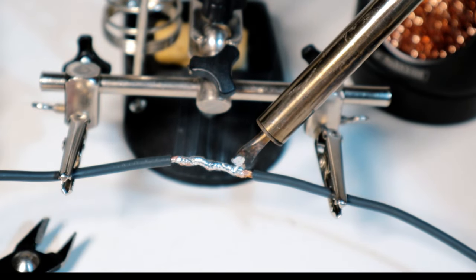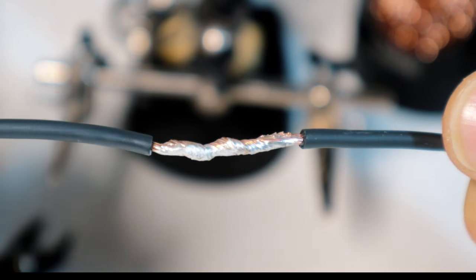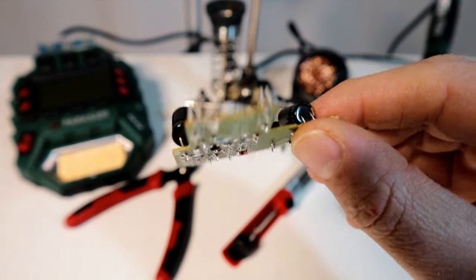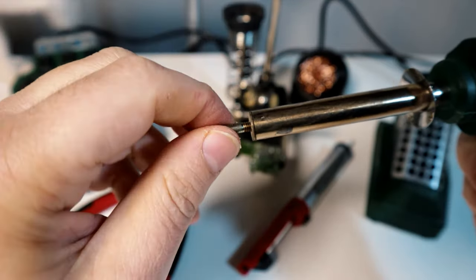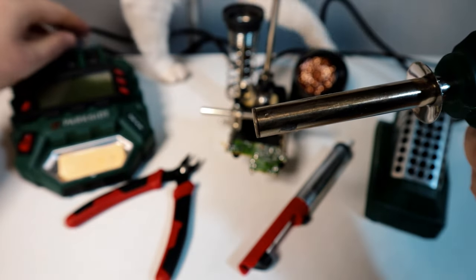While to remove tin or desolder tinned electronic components there are several methods. Use a vacuum pump that creates a vacuum that sucks the molten tin out of the solder melted by the soldering iron.